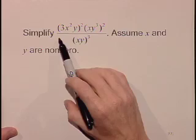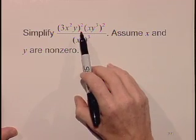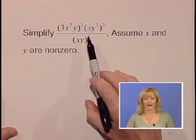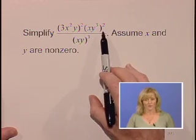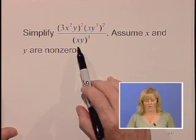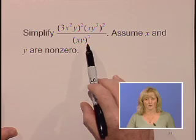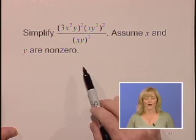We'd like to simplify the quantity 3x squared y squared times the quantity xy cubed quantity squared all divided by the quantity xy cubed. We're going to assume that x and y are non-zero.